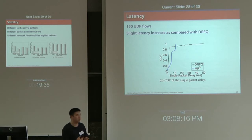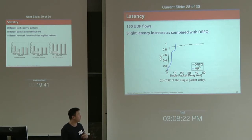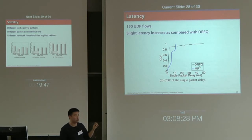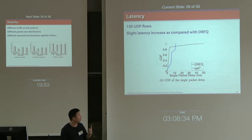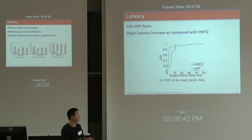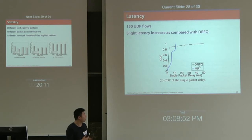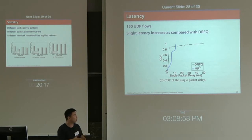For latency evaluation, we consider 150 UDP flows and run both the existing DIFQ algorithm and our algorithm. For packet delay, DIFQ is generally better than ours overall, but it has a relatively long tail in the CDF distribution — meaning most packets are processed quickly but some experience much longer delays. For our algorithm, we sacrifice a little on average scheduling delay, but the delay distribution is relatively stable and within a small range.